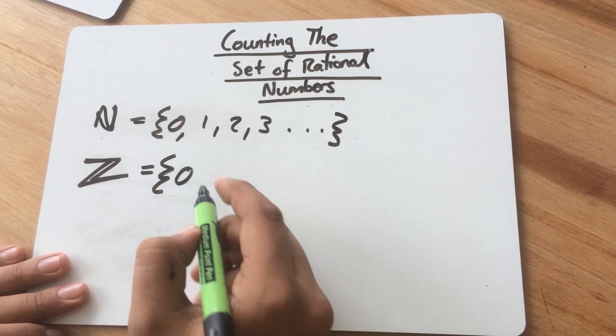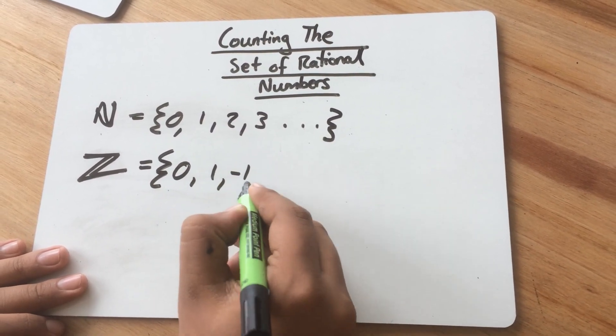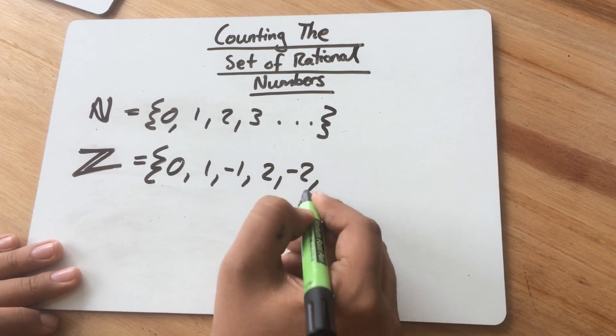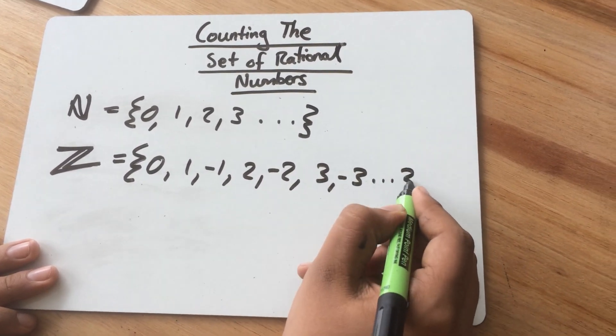So what we have to do is we have to alternate between positive and negative integers. So, as always, we start with 0, then we go 1, negative 1, 2, negative 2, 3, negative 3, and so on.